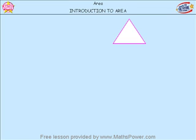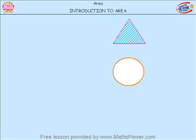Let's shade the area of this triangle. The whole surface is called the area. And this circle — let's pretend it's the cake and let's shade the area, just like when I iced the cake. There we go.